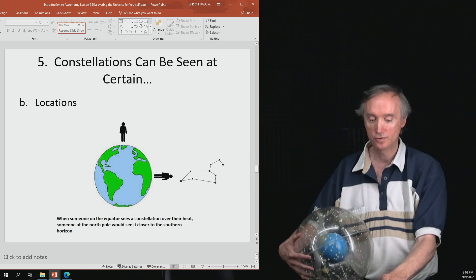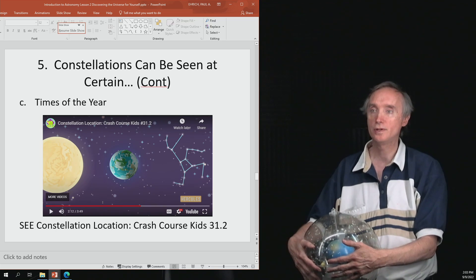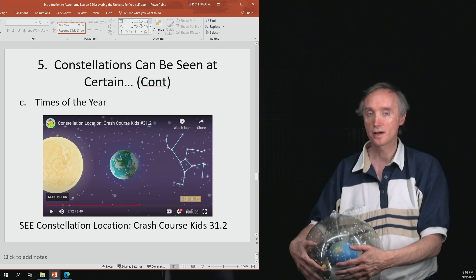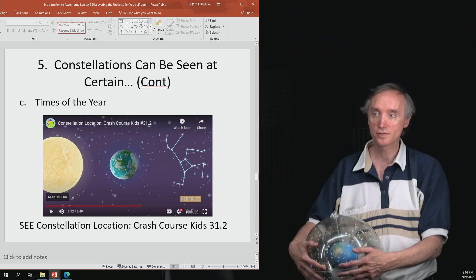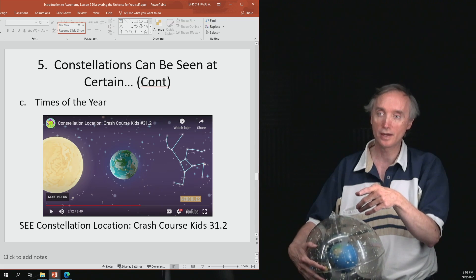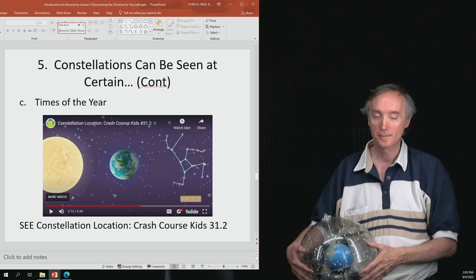Okay, now let's go to our third one: that constellations can be seen at certain times of the year. I've got a video here that I want you to watch. If you will just copy that, Constellation Location, Crash Course Kids, Episode 31.2. Go ahead, watch the video.